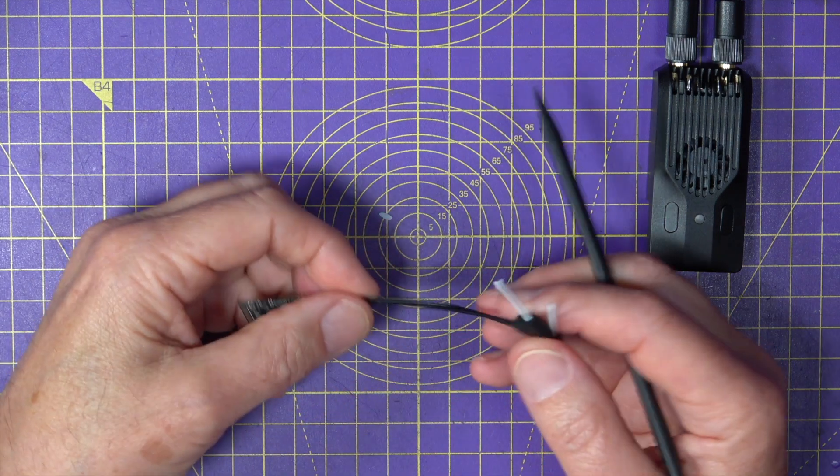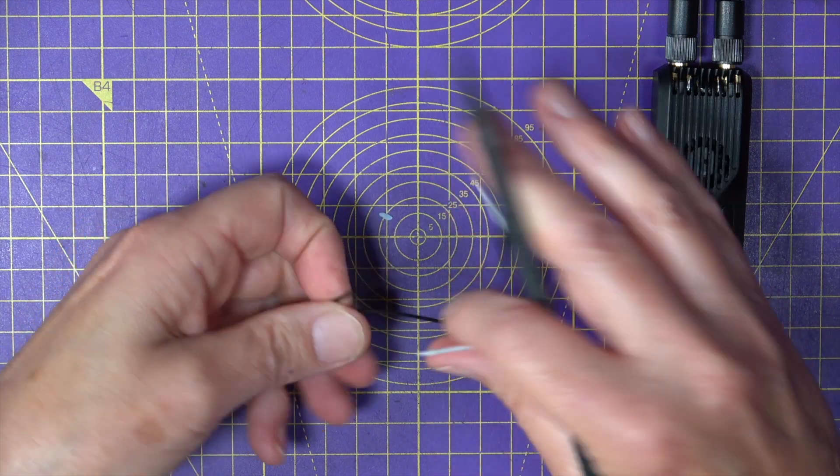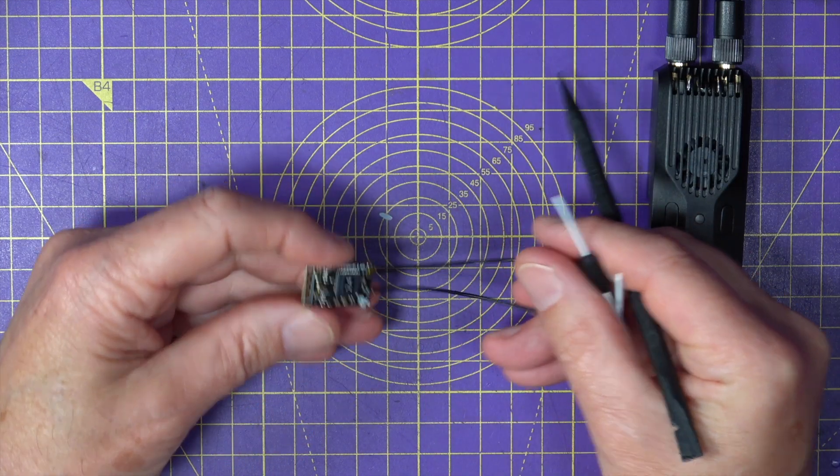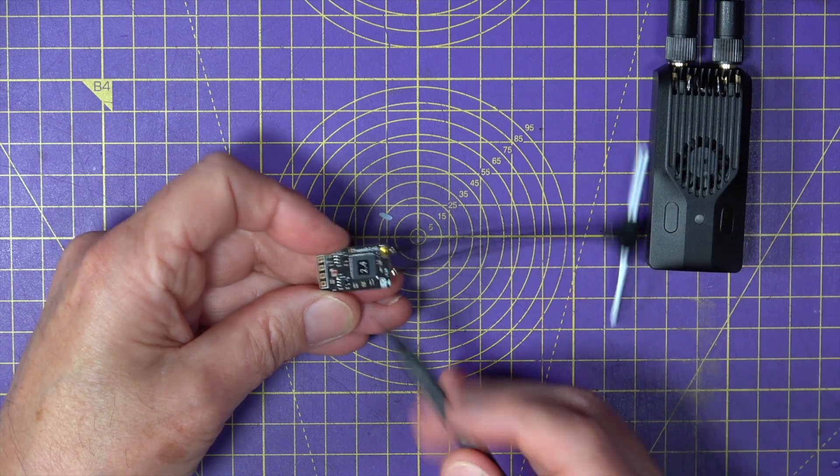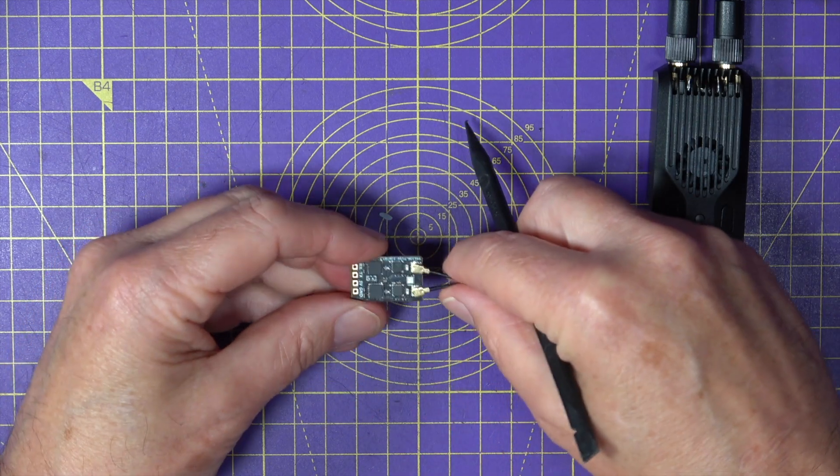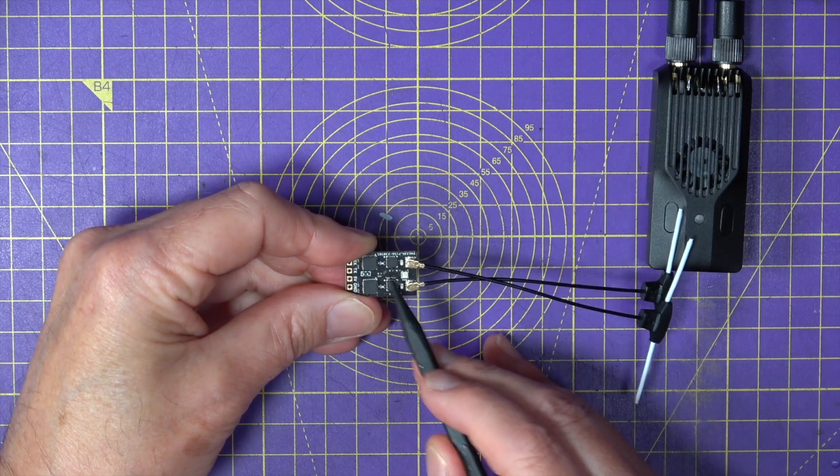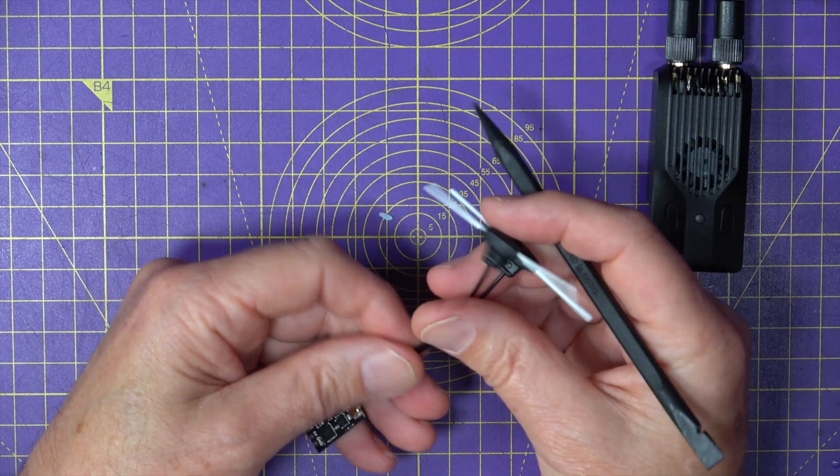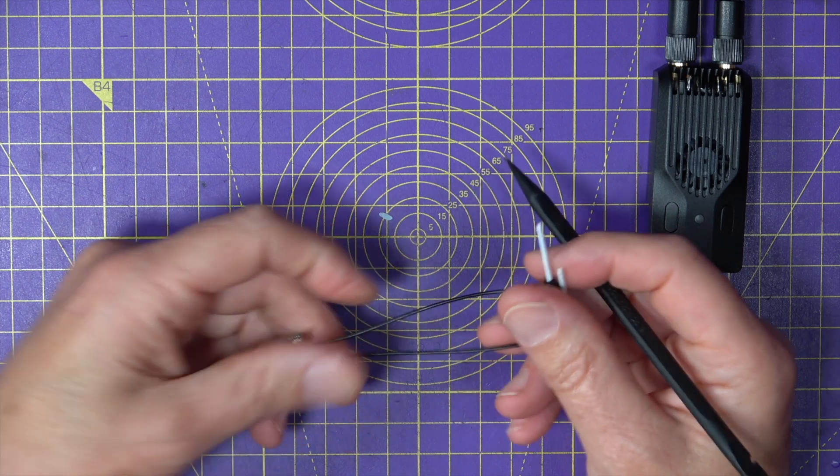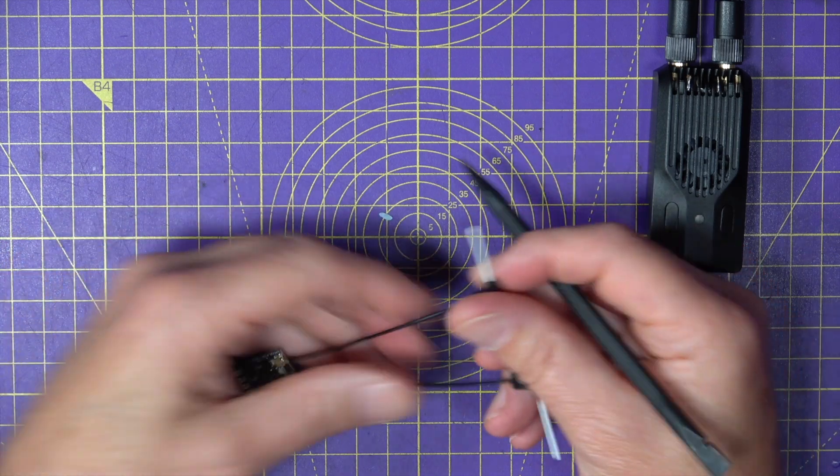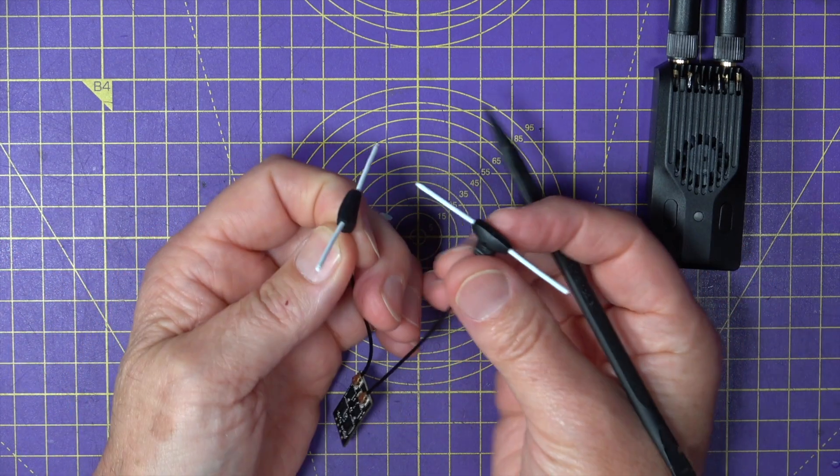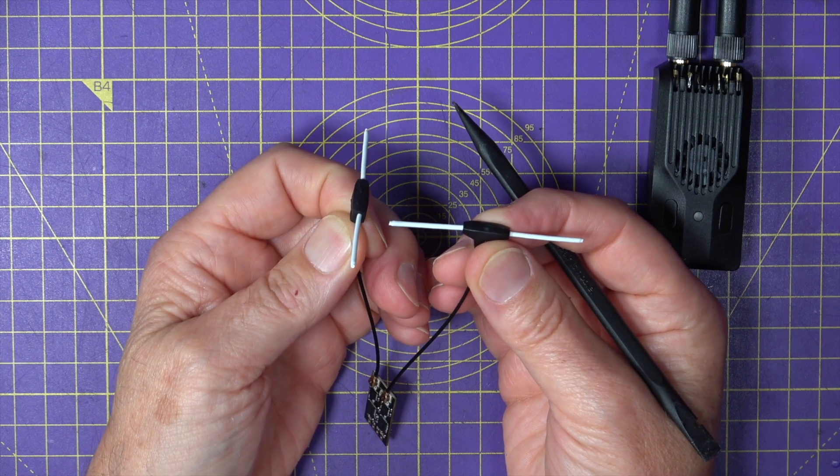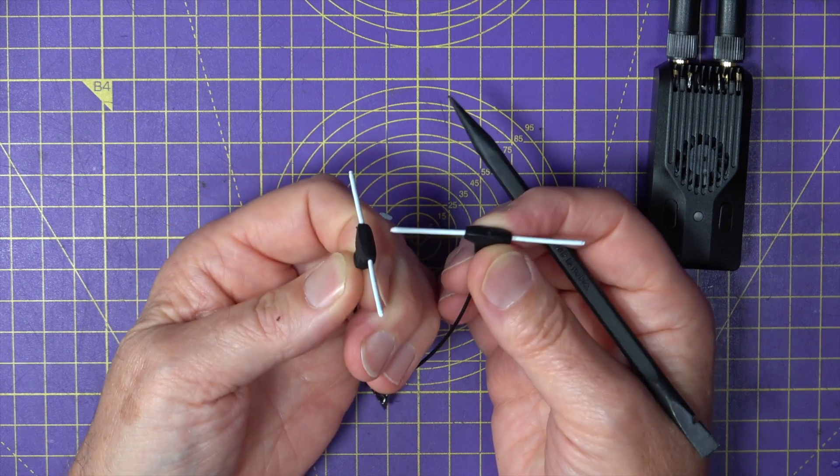A true diversity receiver like this BetaFPV SuperD one has got two separate receivers and RF amplifiers on here and two separate antennas. So there's a better chance of receiving the packets. Plus, you can mount your antennas like this to improve things even more.